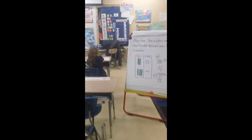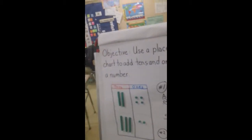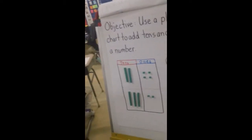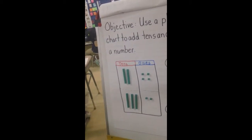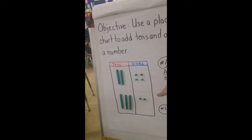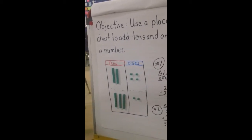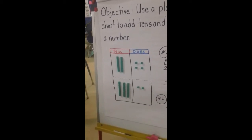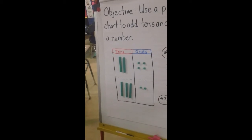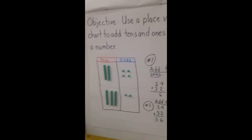Now take a look back at my chart up here. I've got step by step what to do. Step number one: add the ones. I had two tens and four ones, which was twenty-four, and I added thirty-two to it. So first add the ones — four and two makes six. Then add the tens — two and three make five. And that's where the fifty-six comes from.